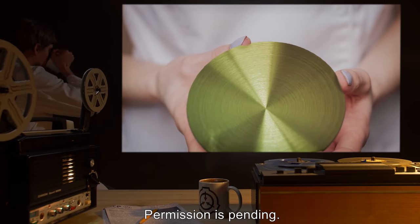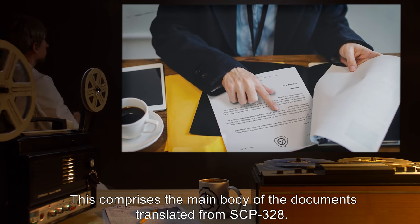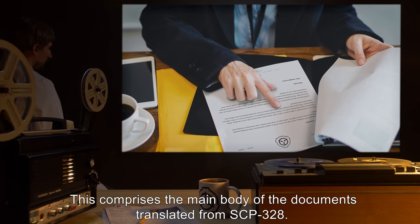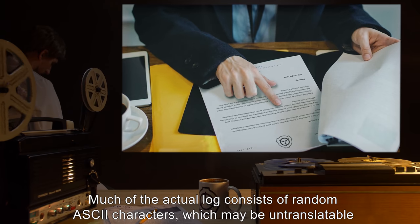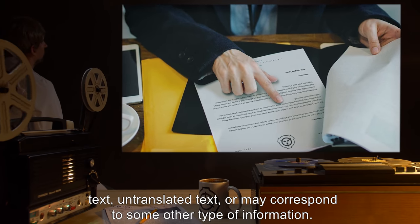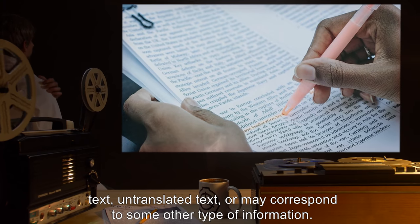SCP-3281: This comprises the main body of the documents translated from SCP-328. Much of the actual log consists of random ASCII characters, which may be untranslatable text, untranslated text, or may correspond to some other type of information.